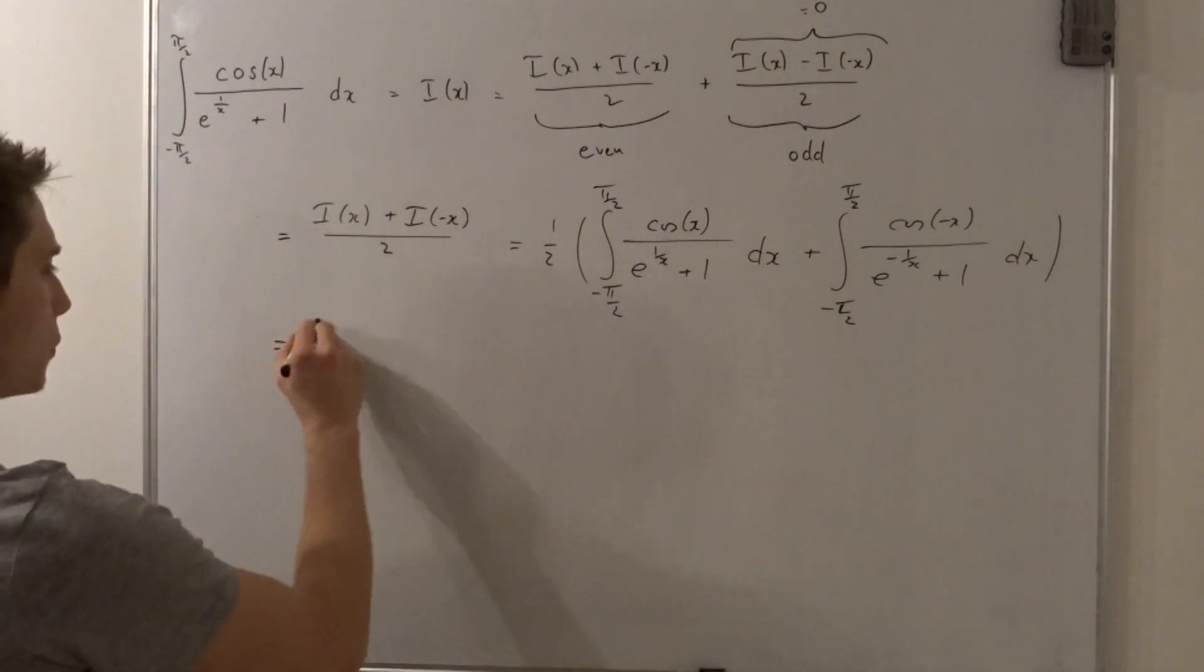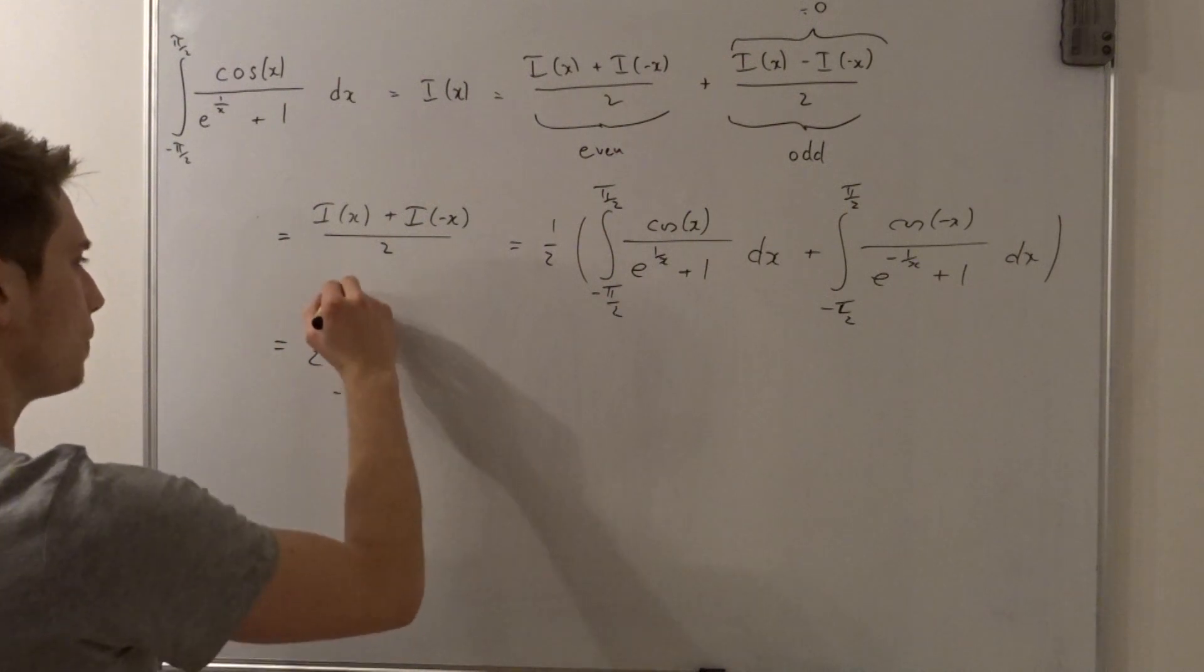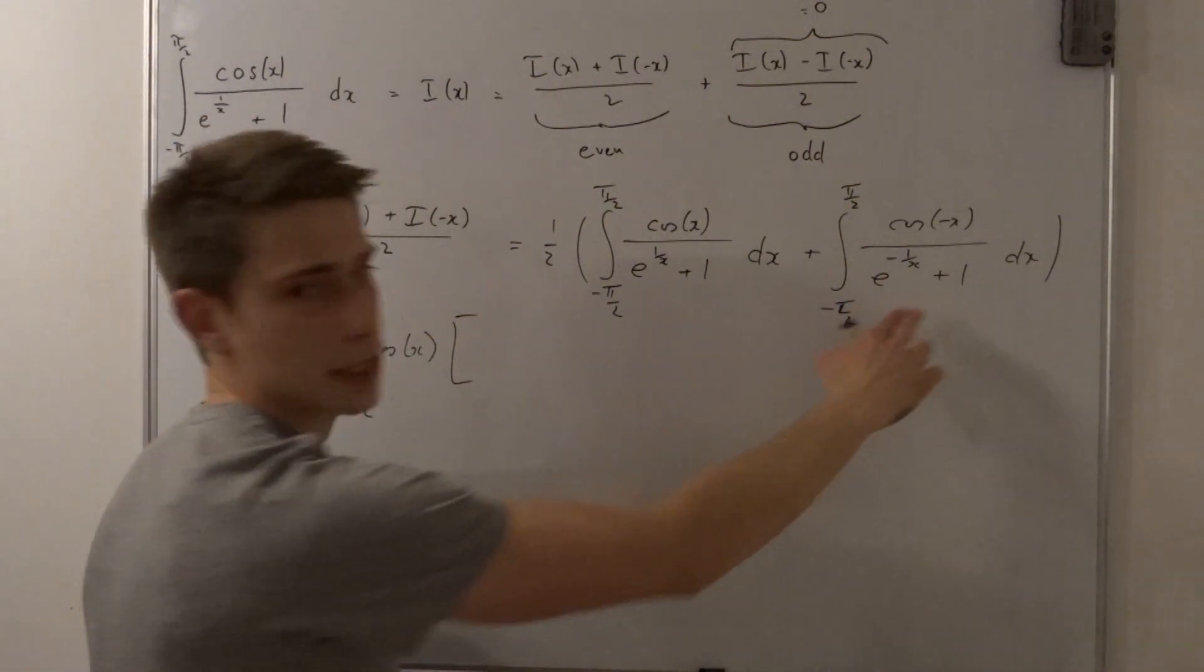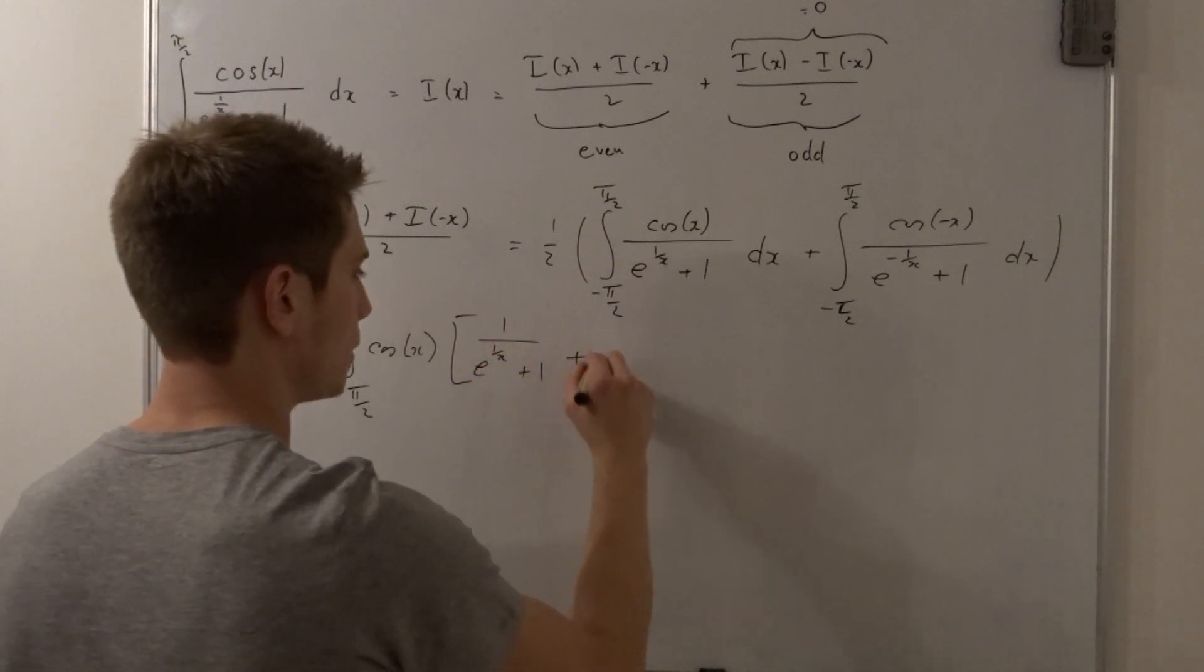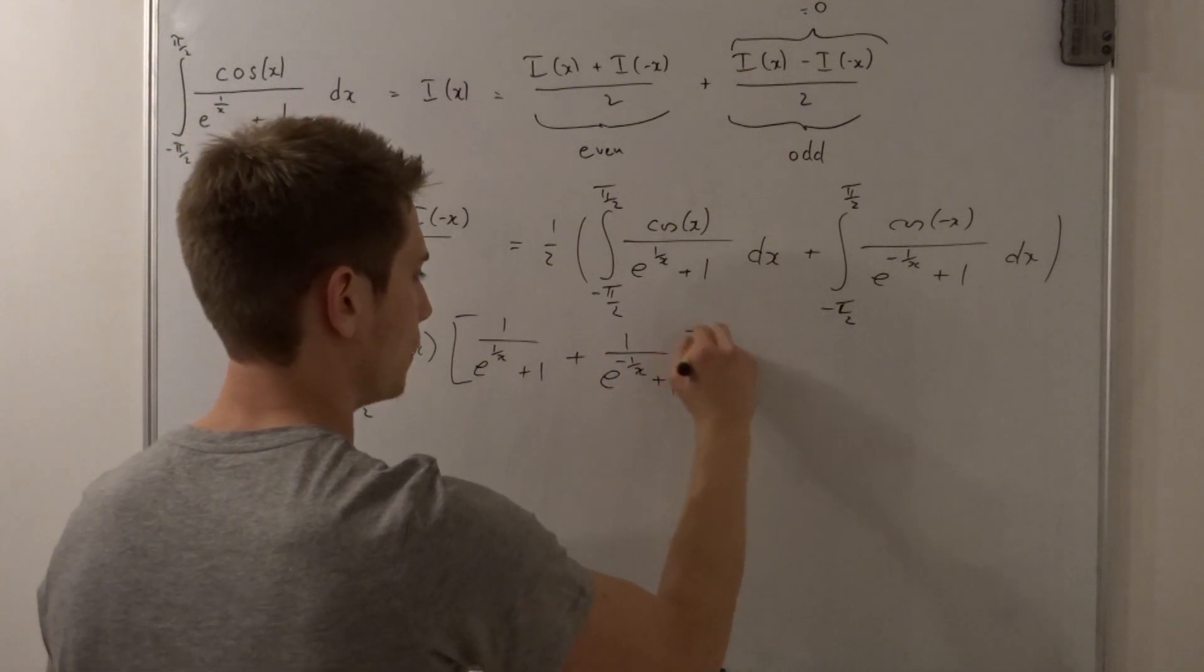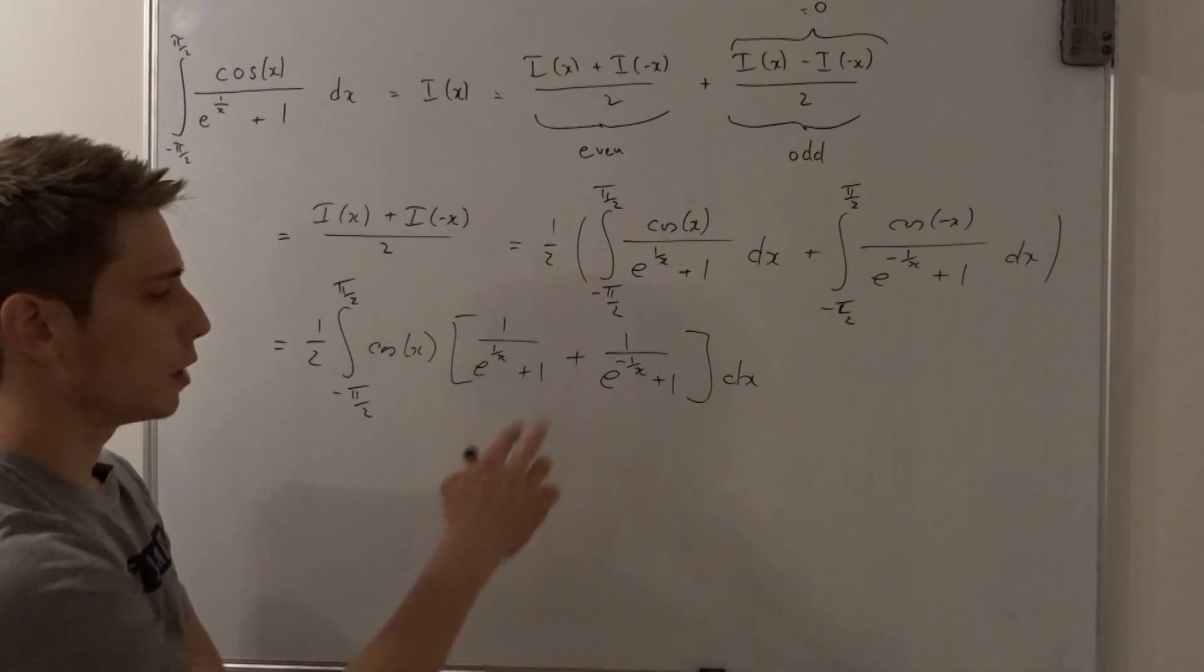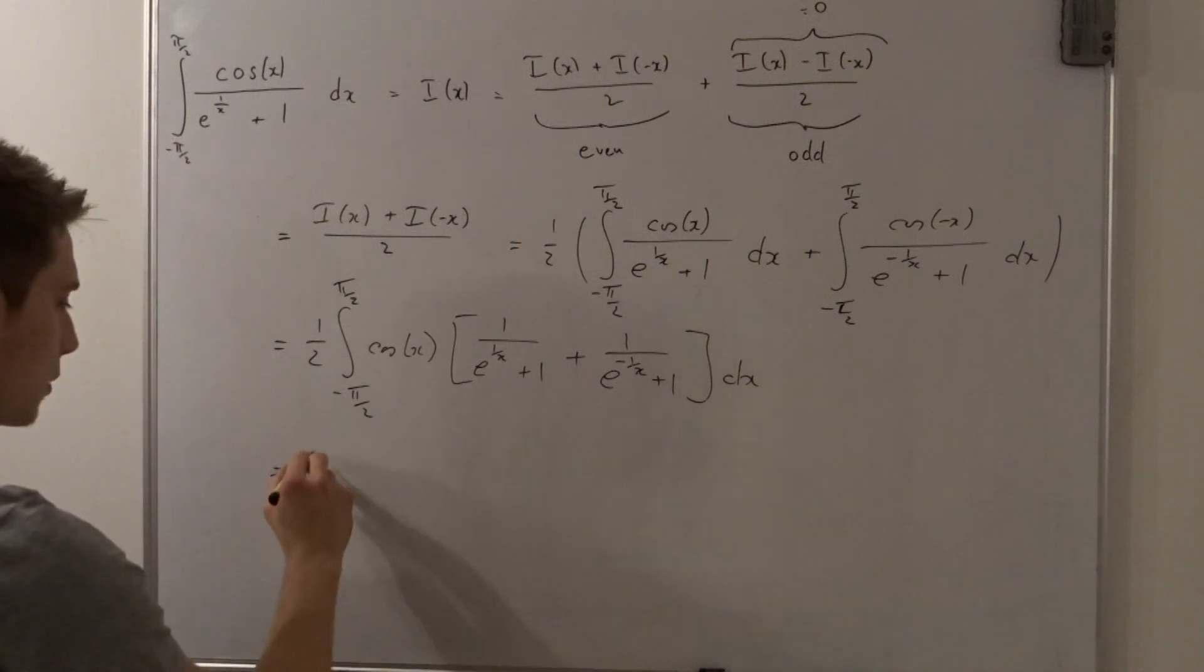So all in all what we end up with is one half times the integral from minus pi over 2 to pi over 2 of cosine of x times. Okay what do we have? Well we just have those two rational functions. So let's just write them down plus 1 over e to the minus 1 over x plus 1 times dx. Okay. What could we do next? Yeah maybe we could add those together and see what we get. So that's the simplest thing we could do right now.